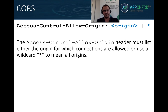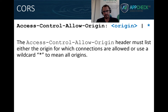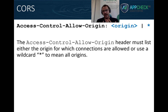The first header of interest is Access-Control-Allow-Origin. This header dictates which origins are allowed to read responses from the request. There are two options: we can specify a specific origin or list of origins, or we can permit any origin using a wildcard asterisk character.